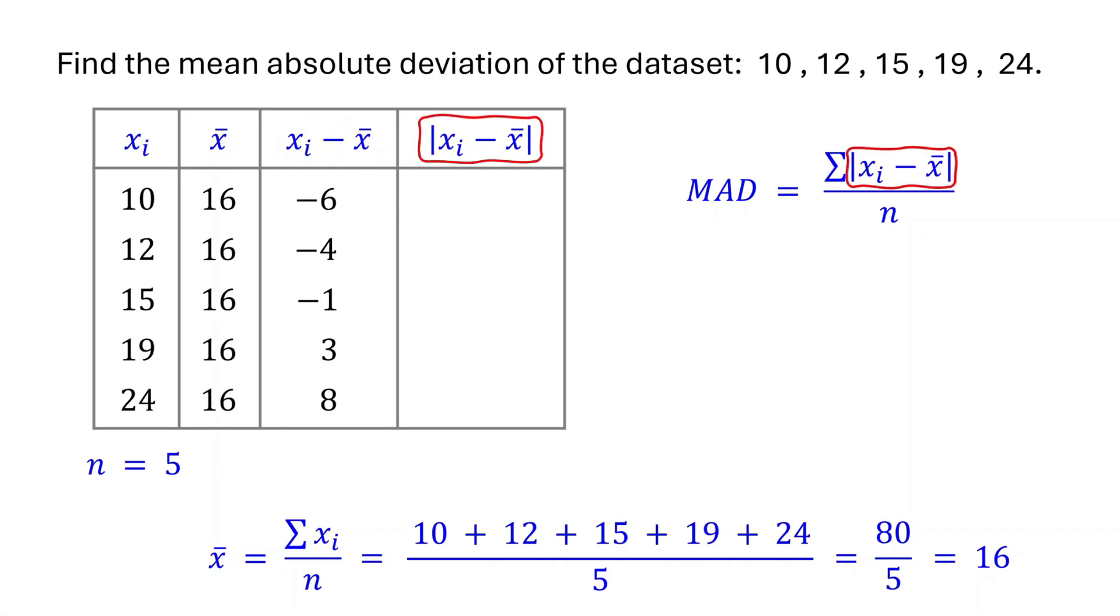Next, take the absolute value of the deviations you obtained. This gives us how far each data point is from the mean.